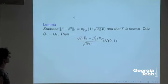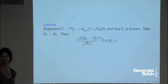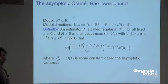This is what we just showed: assume this condition, then you have asymptotic normality with this asymptotic variance theta_{11}. Now the question is: what is the best possible asymptotic variance? What is the Cramér-Rao lower bound?